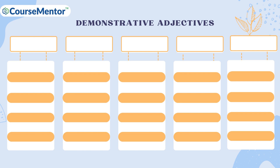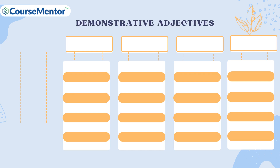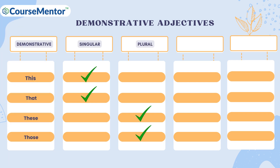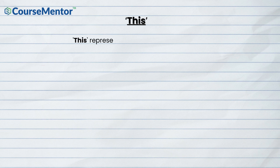There are four demonstrative adjectives: this, that, these, and those. Two of them are singular and two of them are plural. Two of them are near and two of them are far. 'This' represents something that is close by.